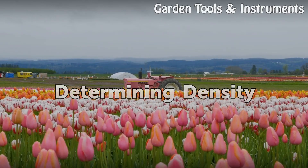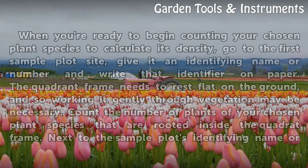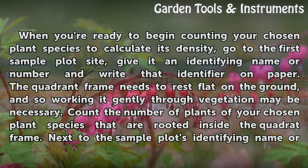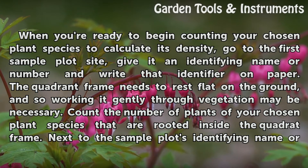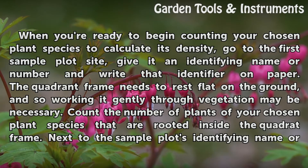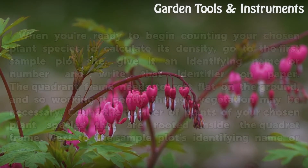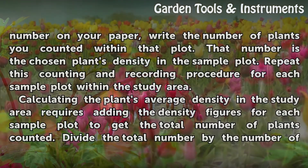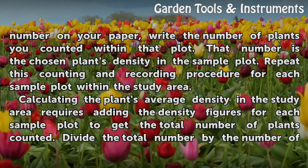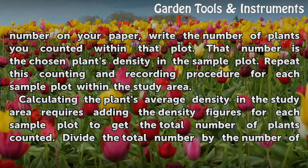Determining Density. When you're ready to begin counting your chosen plant species to calculate its density, go to the first sample plot site, give it an identifying name or number, and write that identifier on paper. The quadrat frame needs to rest flat on the ground, and working it gently through vegetation may be necessary. Count the number of plants of your chosen species that are rooted inside the quadrat frame, and write that count next to the sample plot's identifier. That number is the chosen plant's density in the sample plot.